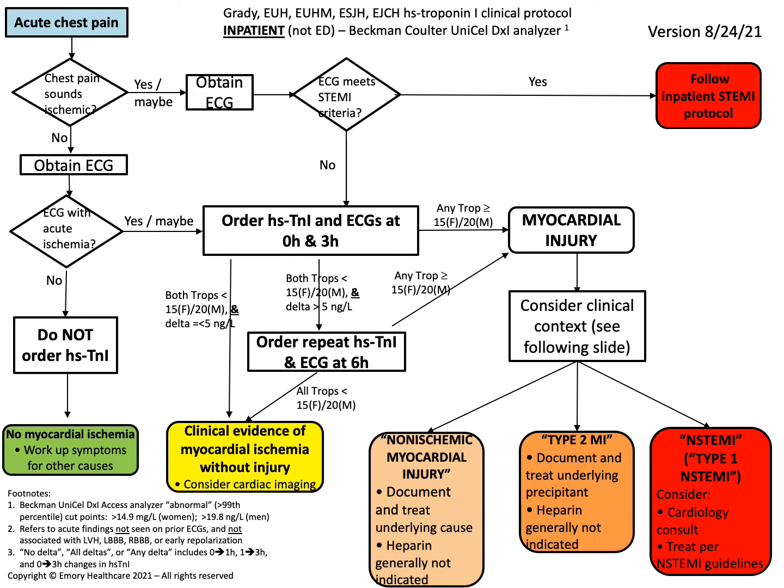If troponins are within the reference range and the delta troponin — the rise — is less than 5 nanograms per liter, the yellow box suggests there is no myocardial injury, though you may still image the patient for myocardial ischemia depending on symptoms. If there is a rise in troponin by more than 5 nanograms per liter, order a 6-hour troponin. If at any point the troponin is greater than 15 in women or 20 in men, that is consistent with myocardial injury, which is covered in more detail on the next slide.